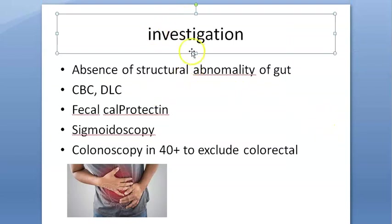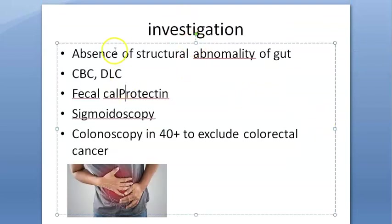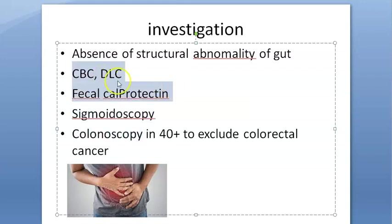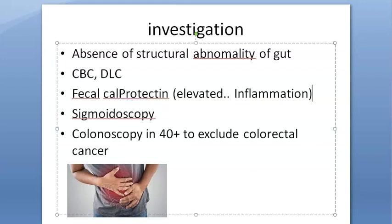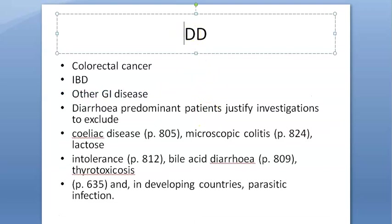For investigations, you check for any structural abnormality of the gut — sigmoidoscopy or colonoscopy to exclude colorectal cancer. You perform a complete blood count and differential leukocyte count. You also measure fecal calprotectin: if elevated, it indicates gut inflammation.